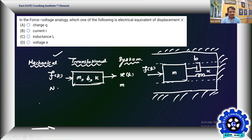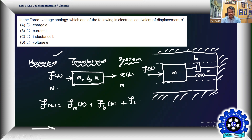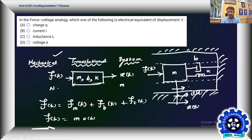This mechanical translational system is governed by a simple force balance equation: F(t) equals the force due to mass plus opposing force due to the frictional element plus opposing force due to the spring, F_K(t). Like KVL is a voltage balance in electric circuits, this is a force balance. F(t) equals mass into acceleration. When force is applied, there is displacement, velocity, then acceleration.